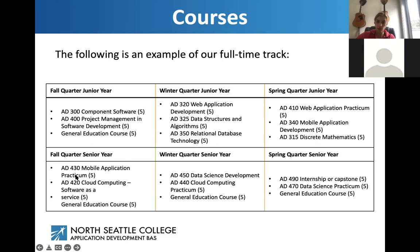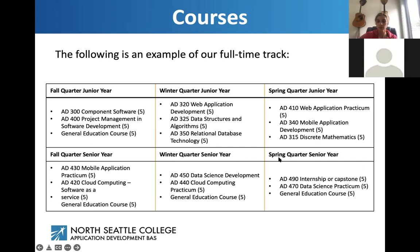Spring quarter you'll do your first project-based course — web application practicum — and mobile application using Android Studio, plus discrete mathematics. Senior year covers your mobile application practicum course, cloud computing software as a service, then winter you complete cloud computing with a project course and start data science. Spring quarter senior year you do the data science project class plus an internship or capstone course. Senior year requires only 10 upper-division credits. These are all hands-on courses with lots of group and partner work, and opportunities to meet with outside clients.